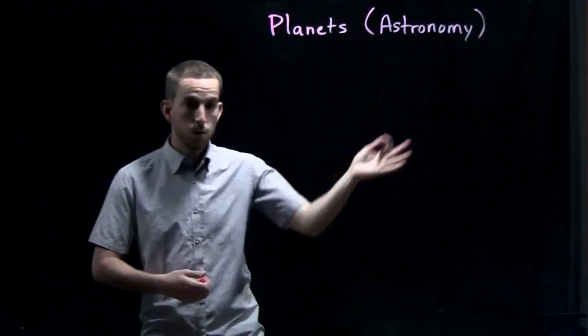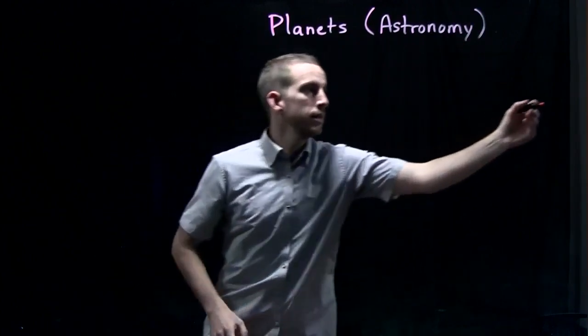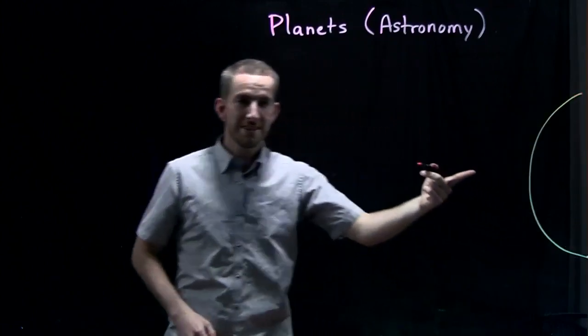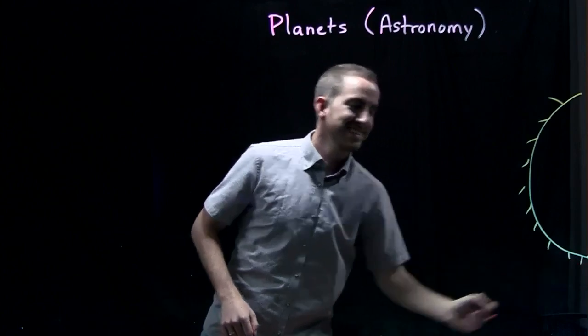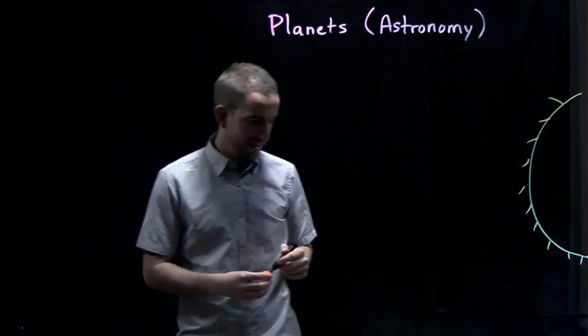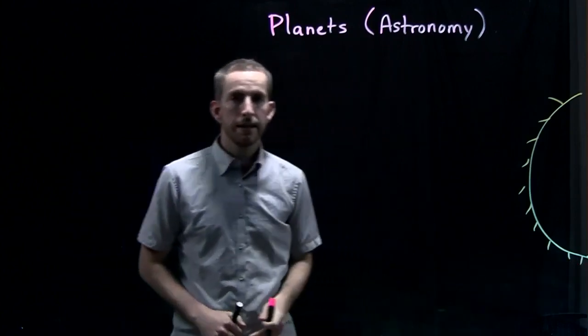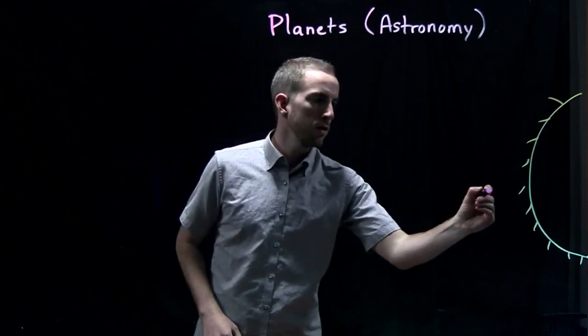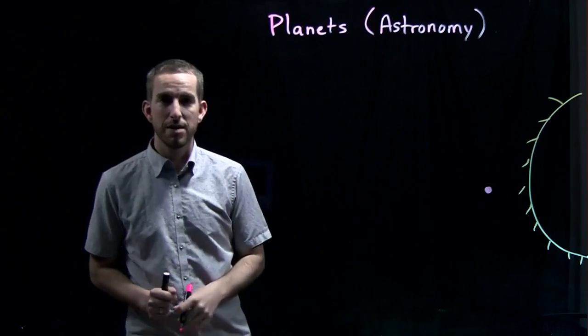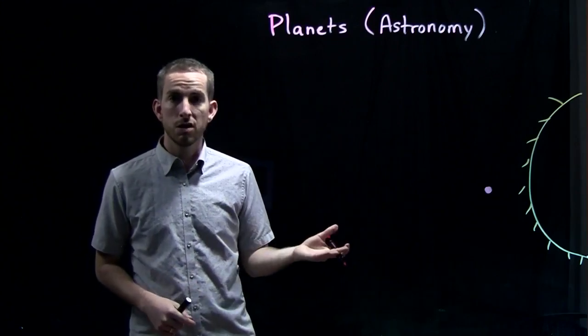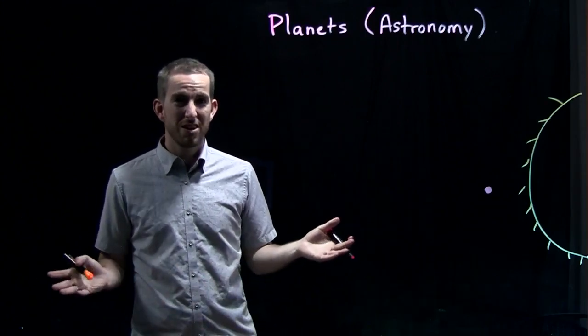So I'm going to draw in order from closest to the sun, farthest away. So this is the sun. Here's the sun. And the planet that is closest to the sun is Mercury. Mercury is small. It's hot. It's dry. In Korean it's called 수성. Like water, but there's no water.